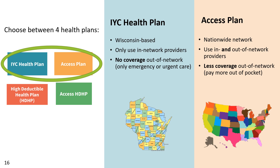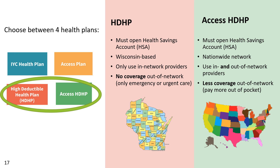You choose between four health plans. The It's Your Choice health plan, or blue plan, is Wisconsin-based with only in-network providers and no coverage out of network except emergency or urgent care. The Access plan, or yellow plan, has a nationwide network with in and out of network providers, but less coverage out of network with more out-of-pocket costs. The High Deductible Health Plan, or red plan, requires you to open a health savings account, is Wisconsin-based, with only in-network providers and no out-of-network coverage except emergencies. The Access High Deductible Health Plan, or green plan, also requires an HSA, has a nationwide network, with in and out of network providers, less coverage out of network, and higher out-of-pocket costs.